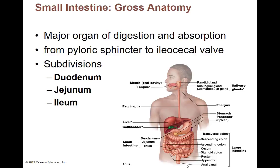The small intestine is the major organ of digestion and the biggest organ for absorption. We've been digesting food as we go — some in the mouth, some in the stomach — but a lot more will happen in the small intestine. We haven't absorbed anything yet until we get to the small intestine. It goes all the way from the pyloric sphincter to the ileocecal valve, which connects the small intestine to the cecum — the first part of the large intestine. There are three divisions: the duodenum, the jejunum, and the ileum.